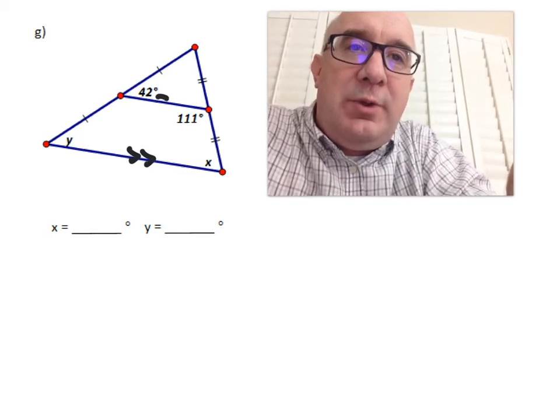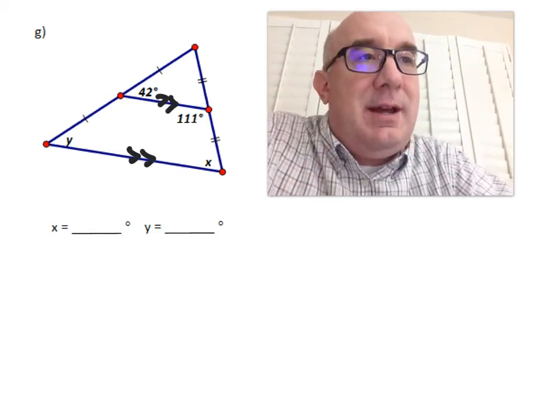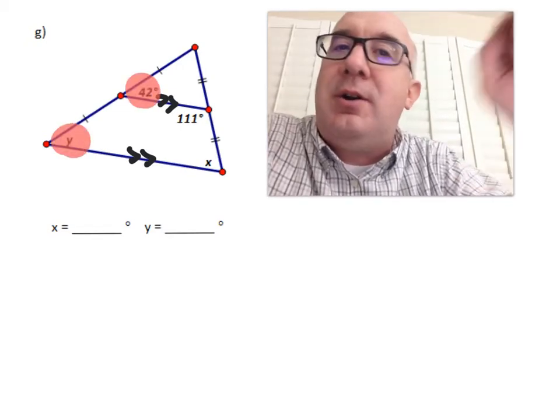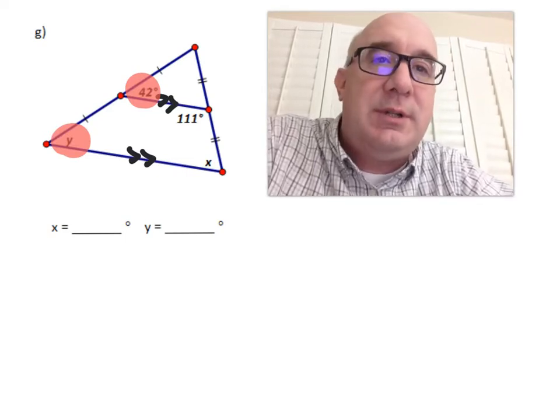And so, we know that these are parallel. And because of that, we actually can see a nice relationship here, a corresponding relationship. So those two have to be equal to each other.